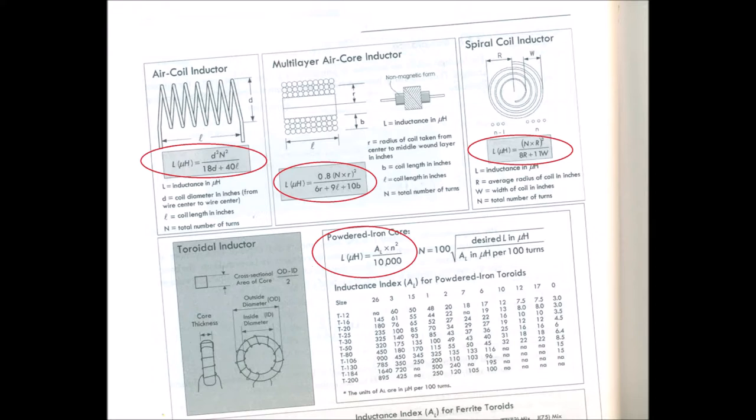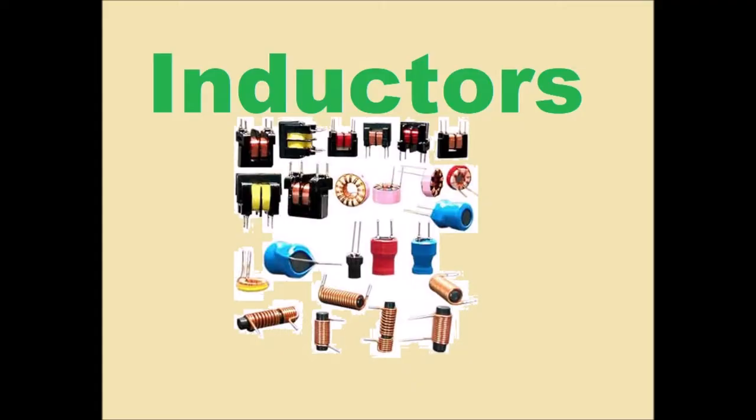Some of the factors without going into the math are like the coil diameter, the coil length, the number of turns in the coil. Sometimes with the construction of the coil, the coil will be multi-layered, almost like the way windings in a motor look. And then there's like spiral coil inductors. But the geometry of the coil seems to matter. And then there's toroidal inductors, in which case the core thickness is important, the inside diameter is important, the outside diameter is important.